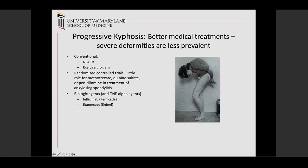In historical cases of severe kyphosis related to ankylosing spondylitis, spinal osteotomy was often required to allow patients to look forward. That's not part of the fracture protocol, but for chronic management, conventional therapy with NSAIDs, exercise programs, and increasingly biologic agents are commonly used to help control the sequelae of ankylosing spondylitis.